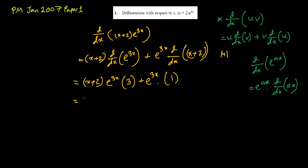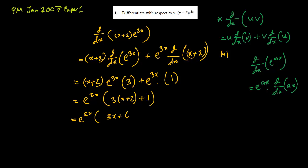The answer can be simplified. Taking e^(3x) as a common factor gives e^(3x)[3(x + 2) + 1], which simplifies to e^(3x)[3x + 6 + 1] = e^(3x)(3x + 7). So the final answer is (3x + 7)e^(3x).